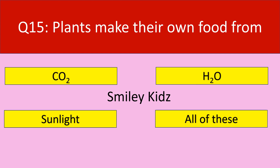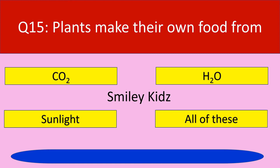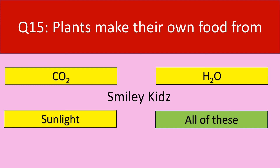Question number 15. Plants make their own food from. Options are carbon dioxide, water, sunlight, and all of these. Your time starts now. The correct answer is all of these. Plants make their own food from carbon dioxide, water, and sunlight.